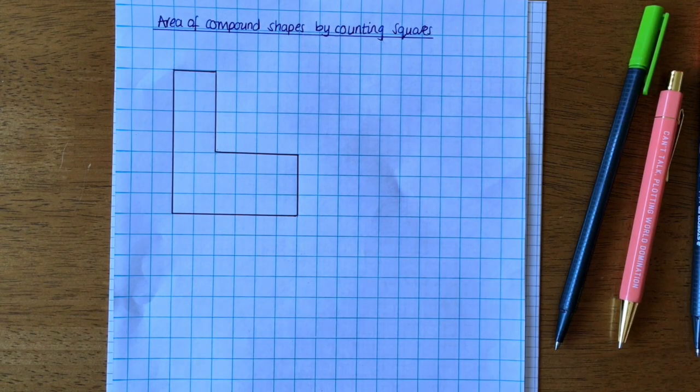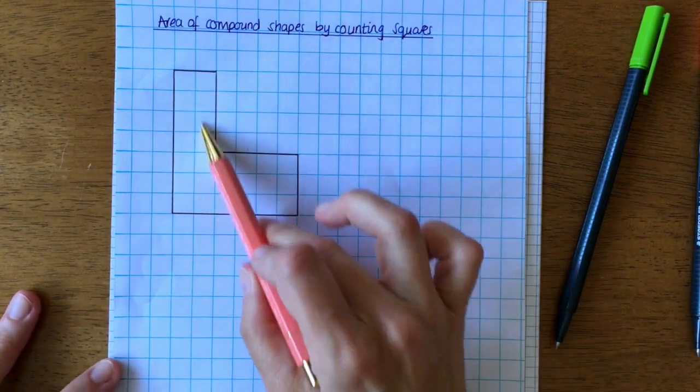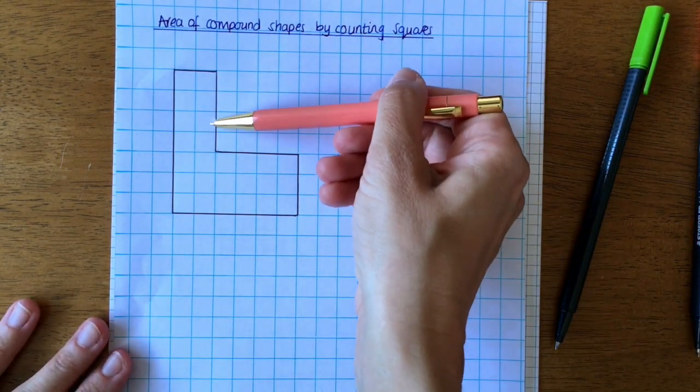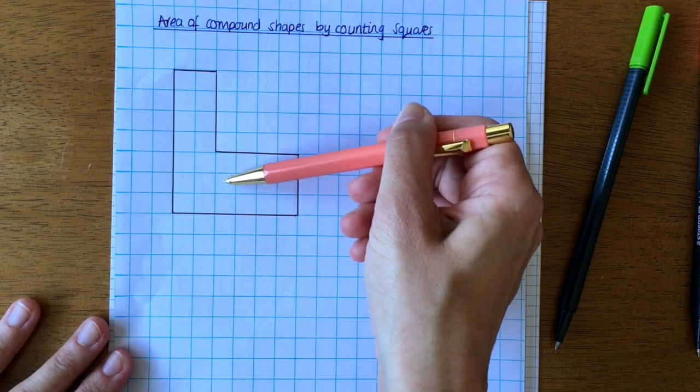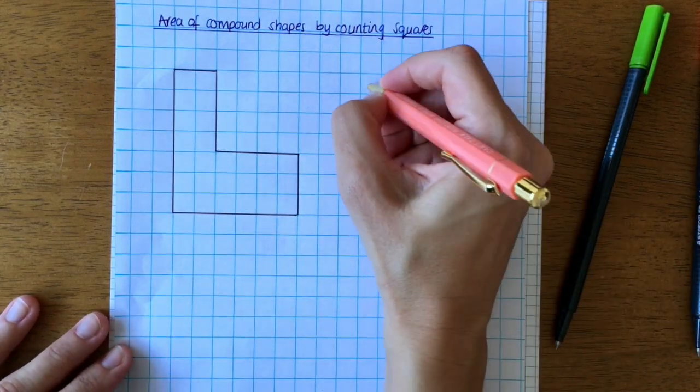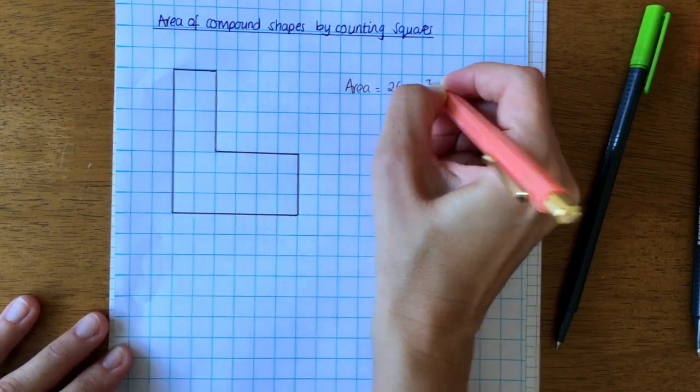So first of all, to work out the area—remember area is inside the shape—I can just count the squares. So I'm going to count squares: 2, 4, 6, 8, 9, 10, 11, 12, 13, 14, 15, 16, 17, 18, 19, 20, 21, 22, 23, 24, 25, 26. So I know that the area of this shape is 26 centimeters squared.